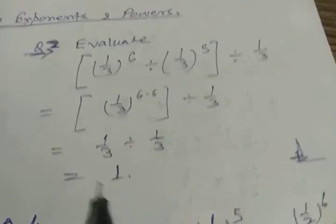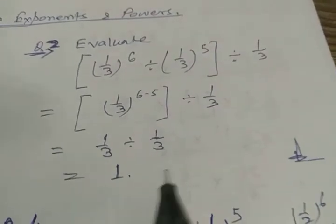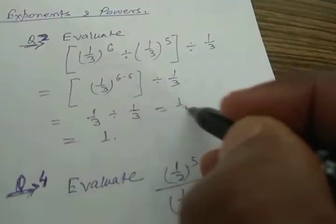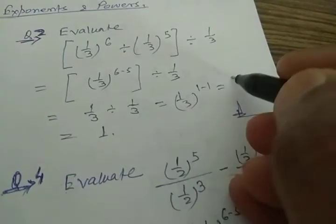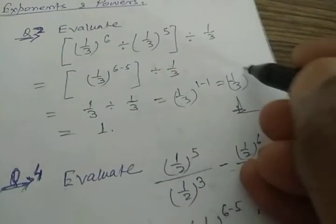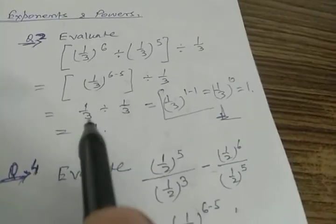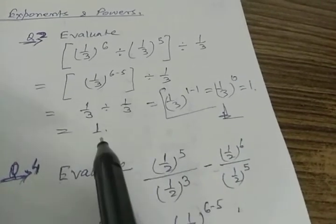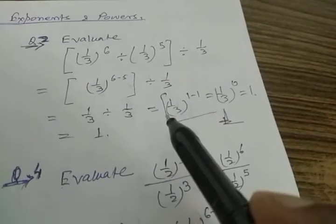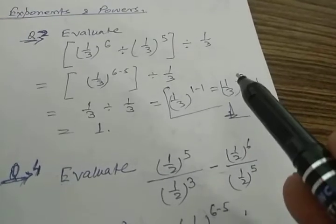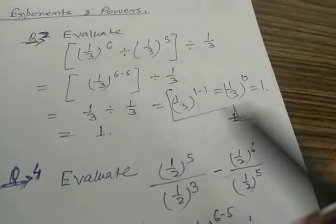You can also do this problem a different way. Writing (1/3)¹ ÷ (1/3)¹, that is (1/3) to the power 1 minus 1, which is (1/3) to the power 0, and that equals 1. Directly you can write the same power 1 minus 1 = 0, and something to the power 0 is 1, so your result is 1.